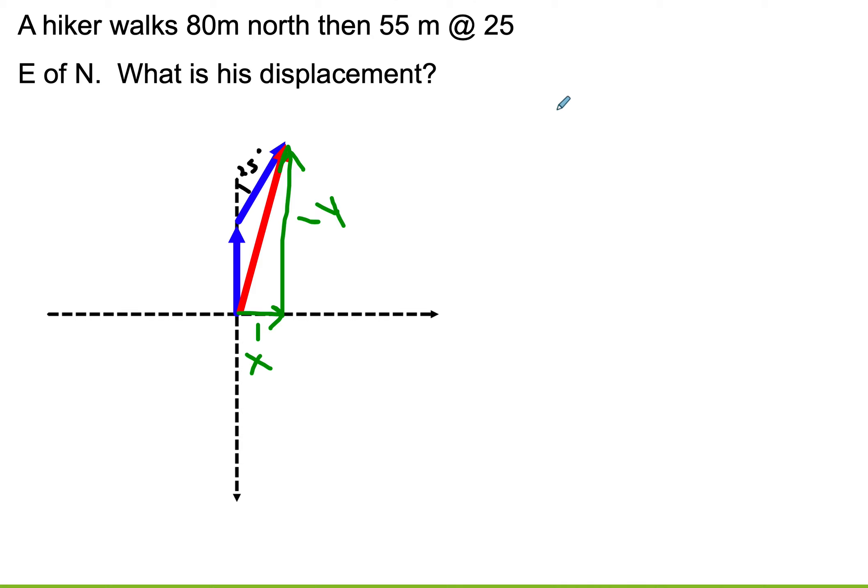So here's how this would work. I want to figure out the x part of both vectors and the y part of both vectors. Now for vector number one, this is pretty easy. Vector number one, it says he's walking 80 meters north. How far does he go in the x direction? He's not walking in the x. He's walking straight up in the y. So the x part of that vector would be zero. The y part of that vector is going to be 80 meters.